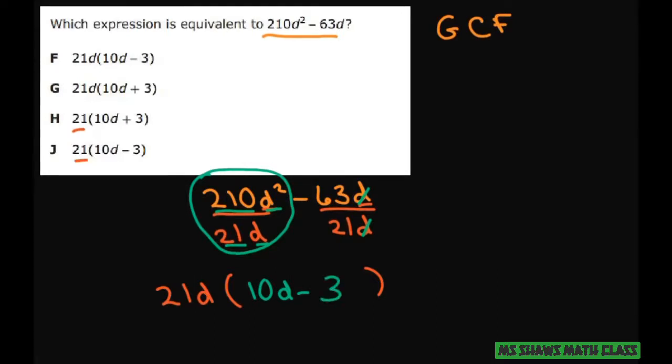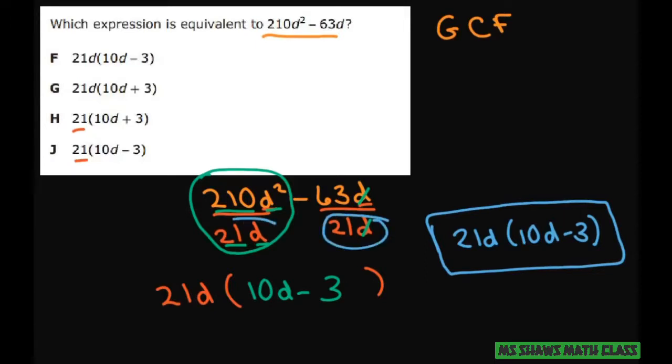So your final answer is going to be 21d times 10d minus 3. So just remember, factoring is like division, but we are not losing our divisor.